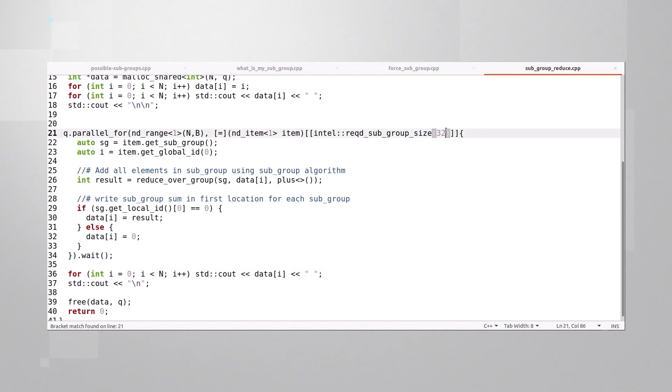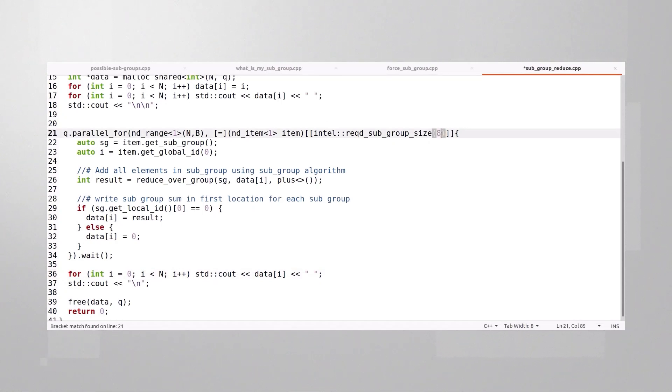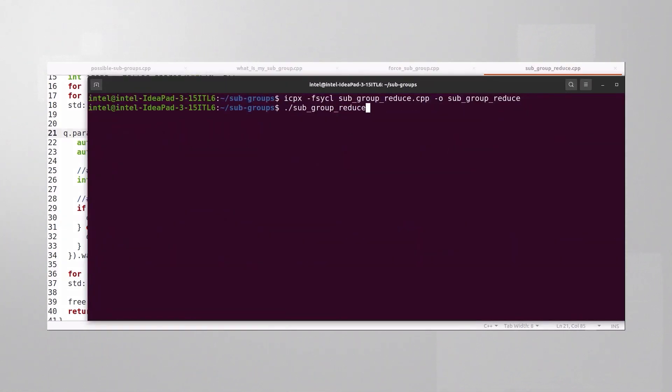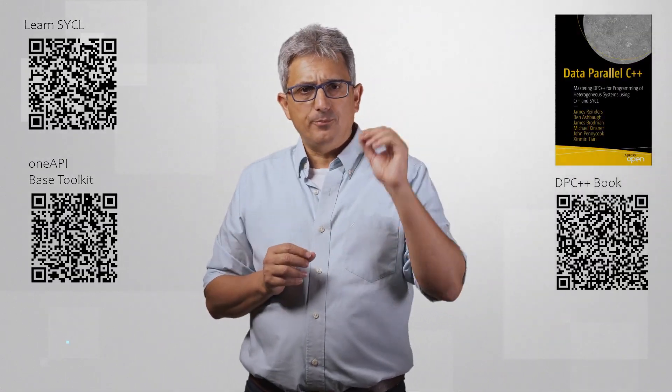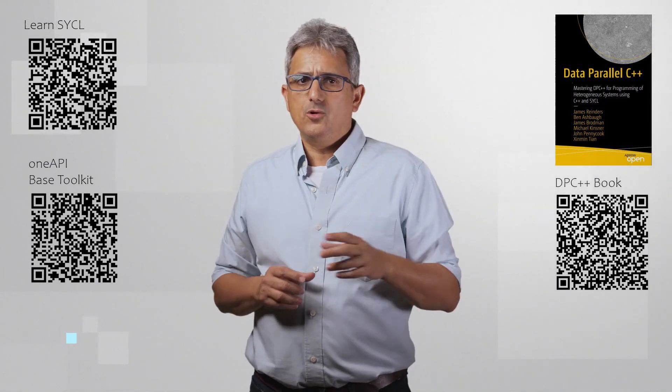Now let's change the subgroup to 8. Compile and run. And you can see that now every 8 elements were reduced into the first one. Pretty cool. So, subgroups can help you further improve the performance of your code.